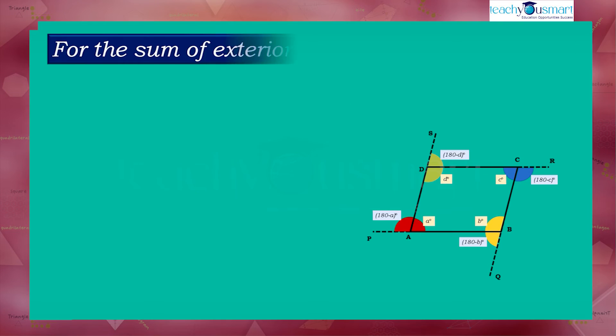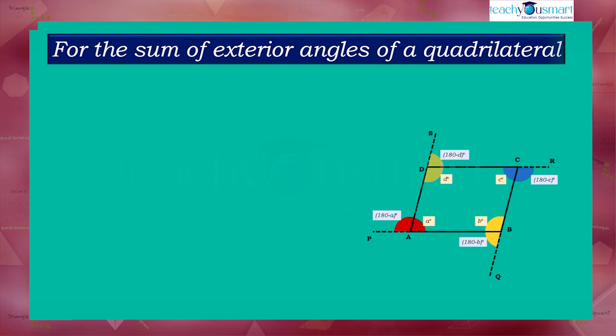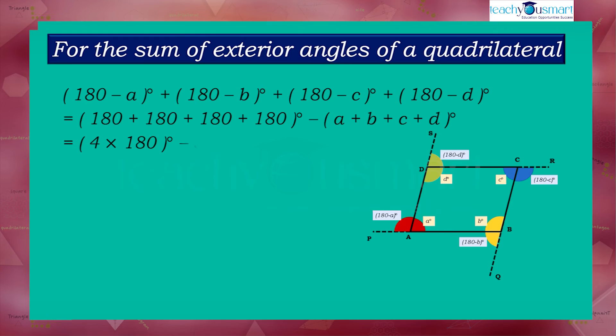Now to find the sum of exterior angles, we will add up all the angles outside the quadrilateral. That is, 180 minus A plus 180 minus B plus 180 minus C plus 180 minus D, which equals 180 plus 180 plus 180 plus 180 minus A plus B plus C plus D, equals 4 multiplied by 180 minus 360, equals 720 minus 360, equals 360 degrees.